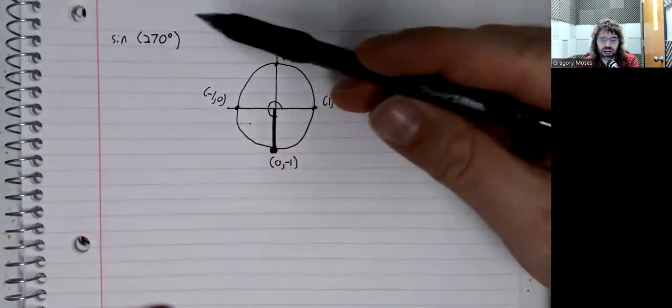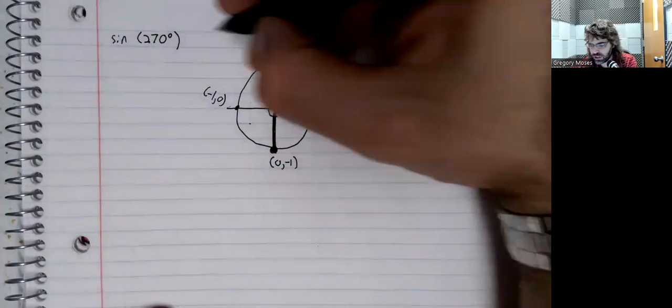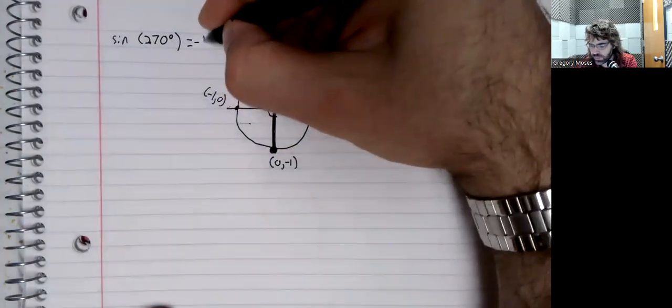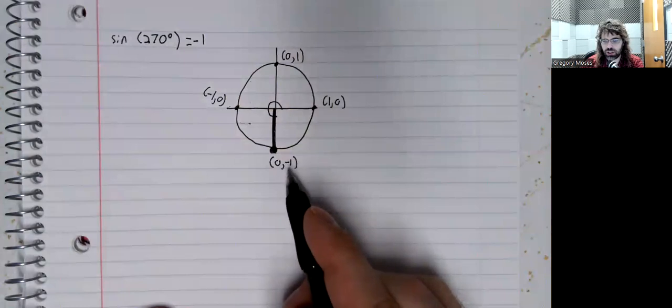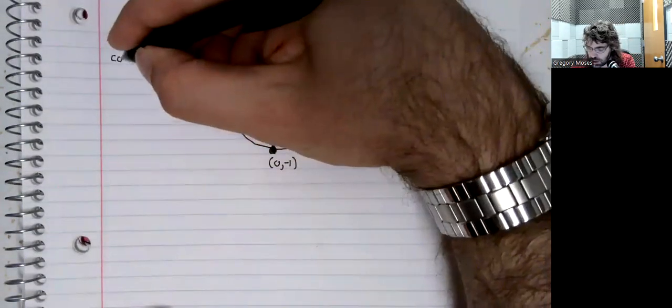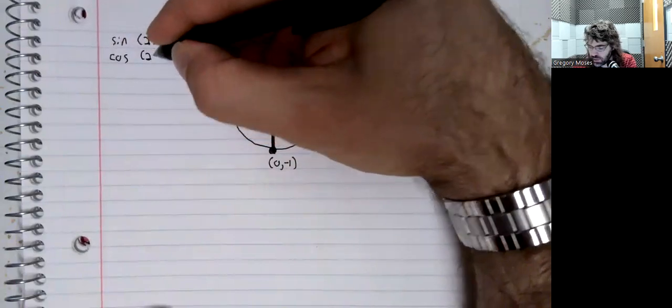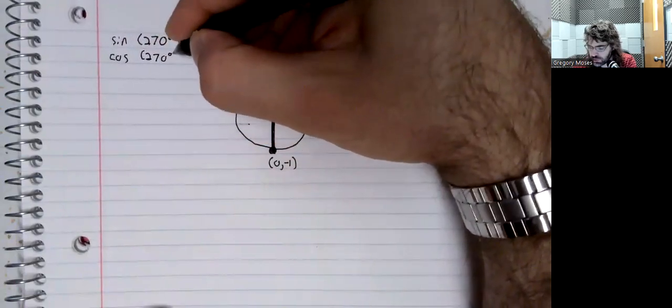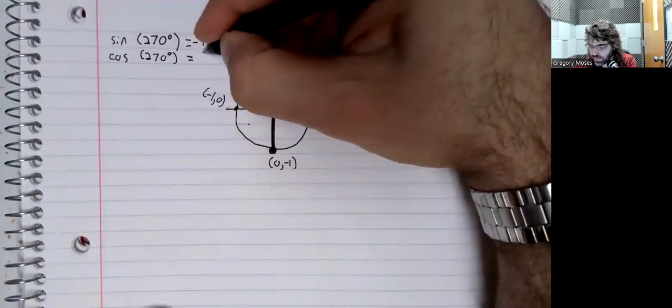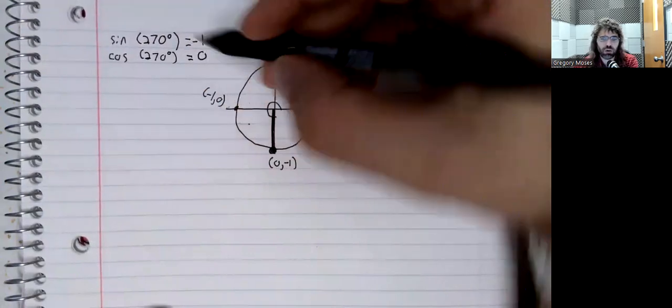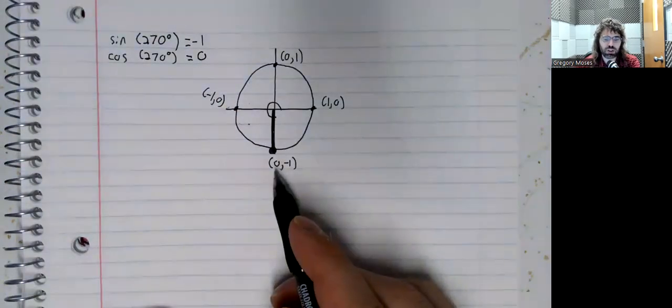So the sine of 270 degrees is negative one, the y-coordinate. The cosine of 270 degrees is zero, the x-coordinate.